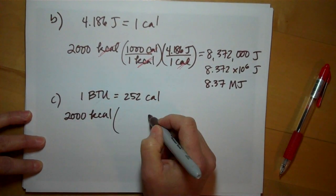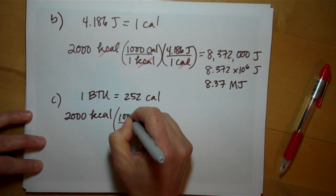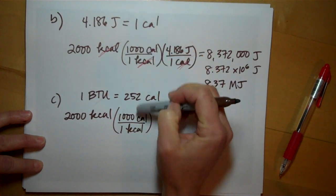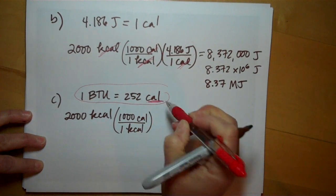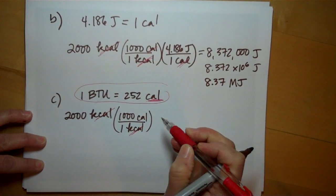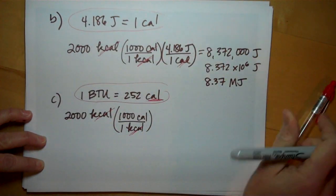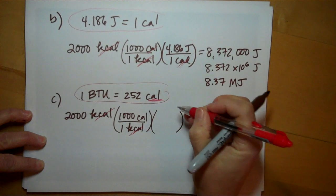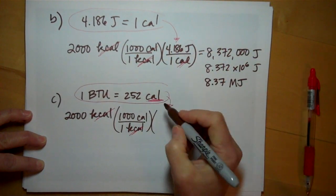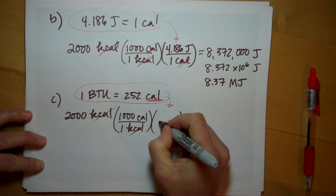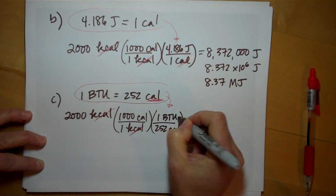2000 kilocalories, and you know that one kilocalorie has a thousand calories. This is the same first step because our relationship is in calories. So we have to get out of kilocalories and get to calories, just the same way we did before, so that we can use this conversion factor.